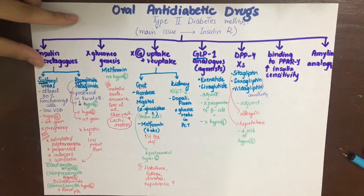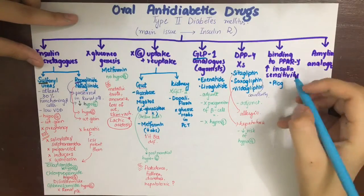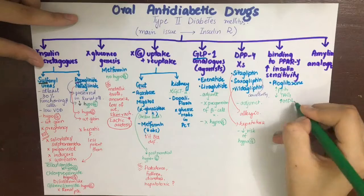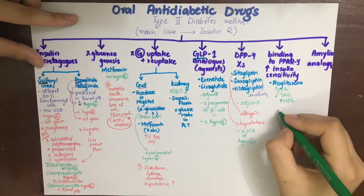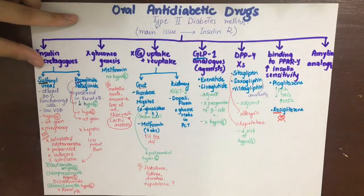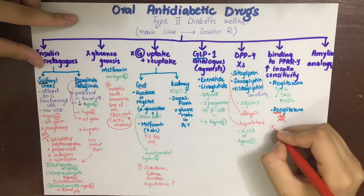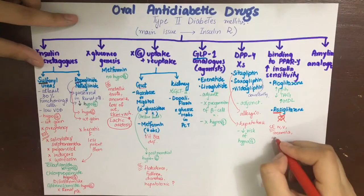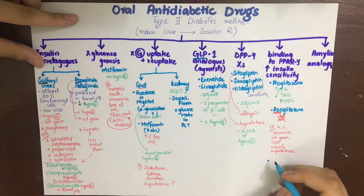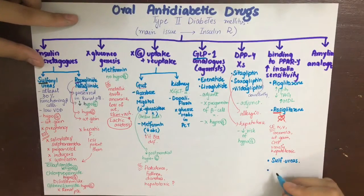Drugs that bind to PPAR gamma and increase insulin sensitivity are primarily pioglitazone, which has increased plasma protein binding and the special property of decreasing serum triglycerides while increasing HDL. The next is rosiglitazone; collectively these are thiazolidinediones. Rosiglitazone is not that 'rosy' — it causes cardiovascular events and is even suspended in some countries. General side effects of thiazolidinediones include nausea, vomiting, anemia, edema, weight gain, precipitation of cardiac failure, and rarely hepatotoxicity. Sulfonylureas and metformin have also been found to increase insulin sensitivity and belong partially to this class.